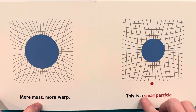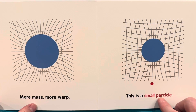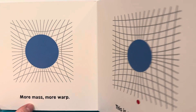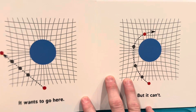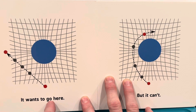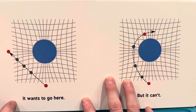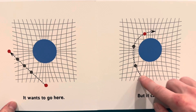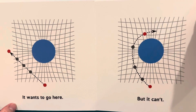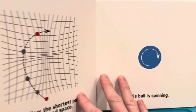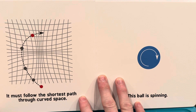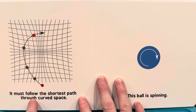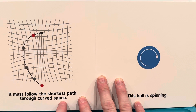This is a small particle. It wants to go here. But it can't. It must follow the shortest path through curved space.